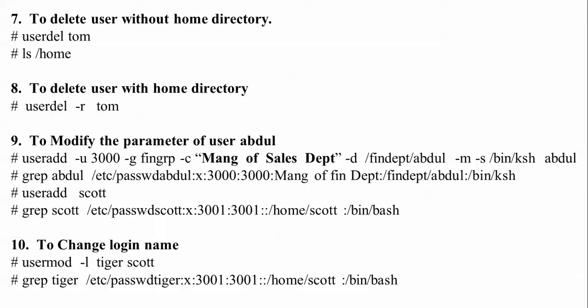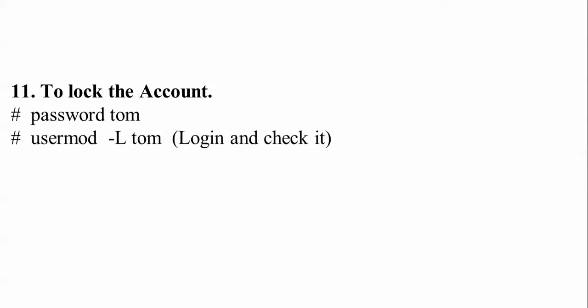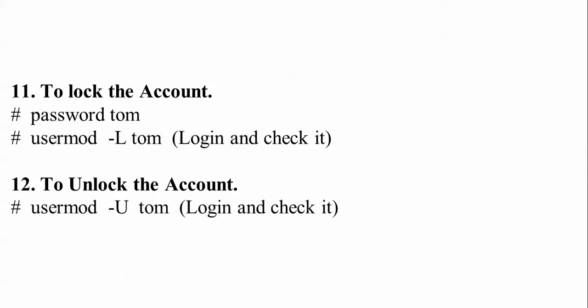The seventh and eighth steps are to delete a user with or without the home directory. The ninth step is to modify parameters of user Abdul. The tenth step is changing the login name. After deleting tom, you can change the login name from the old username tiger to the new username squad using: usermod -l tiger squad. To lock an account, use: passwd -l tom, then you can verify login is blocked.